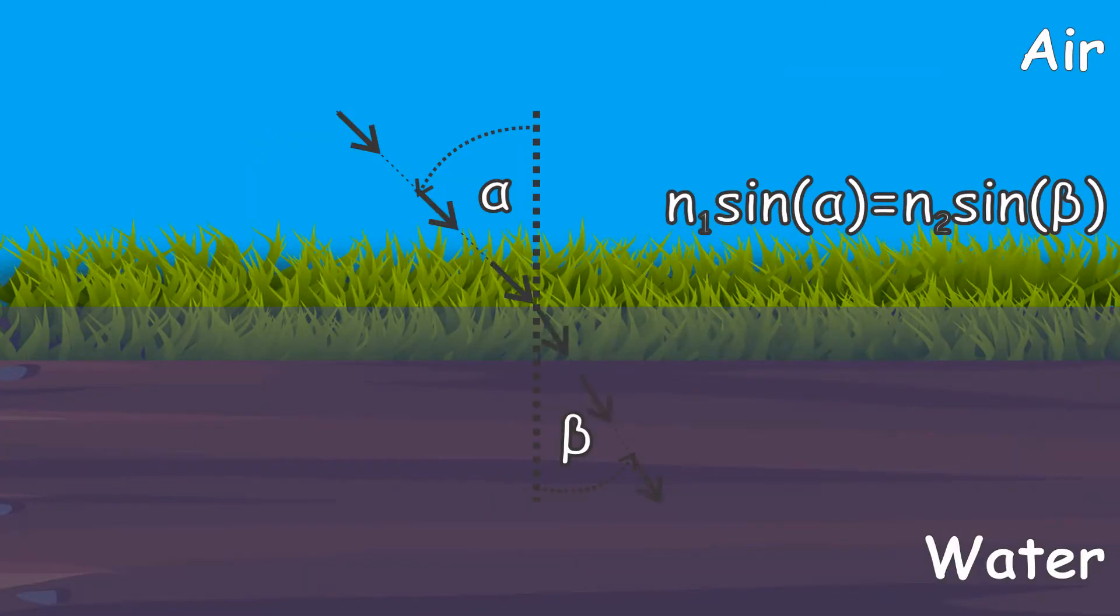When a ray of light hits the boundary surface of two different materials at a certain angle it breaks at a different angle.